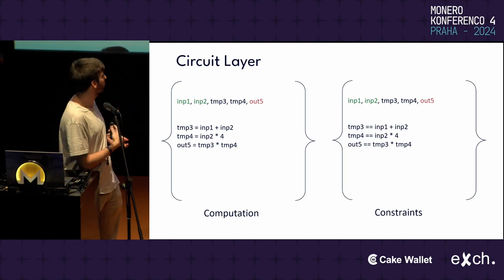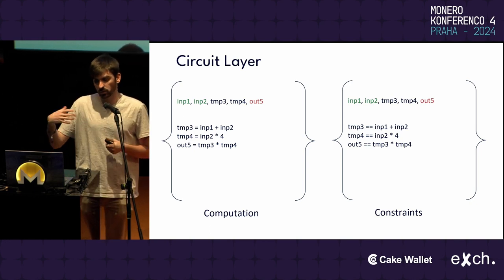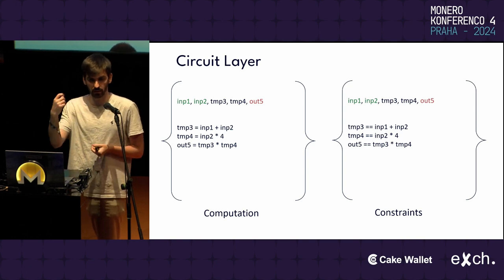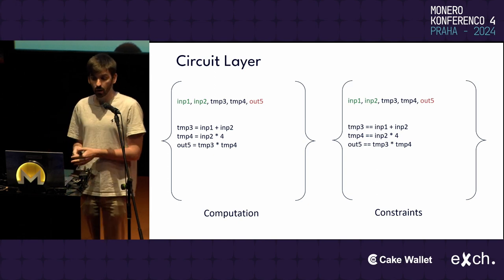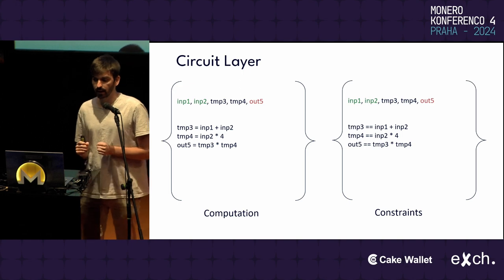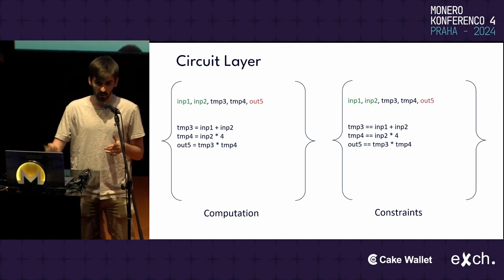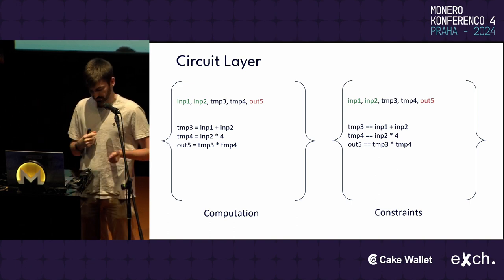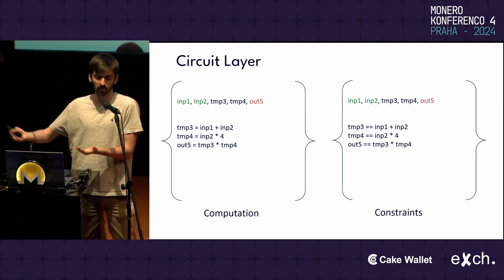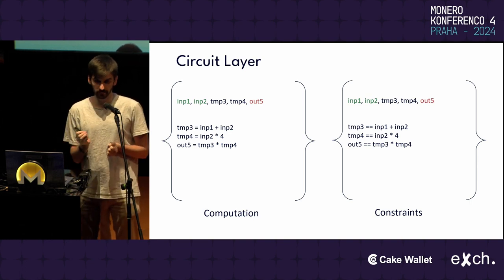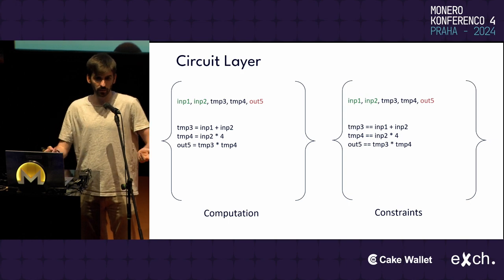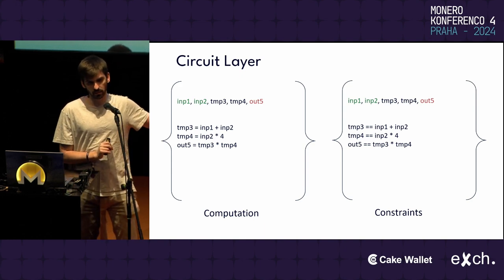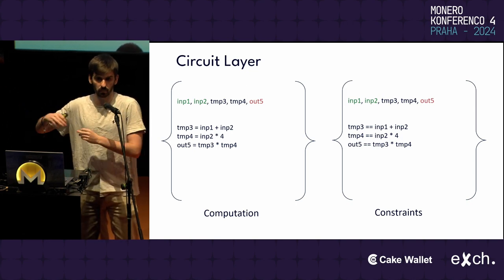The circuit layer has the most bugs possibly because of the different mental model required. When you write a circuit, you have to have two things in mind: the computation part — defining how to compute temporary variables and outputs — and the constraint part, constraining those computations to only accept correct values. The computation part is executed by the prover and the constraints are checked by the verifier. This dual model is different from normal programming and is the main reason why we have so many vulnerabilities in the circuit layer.